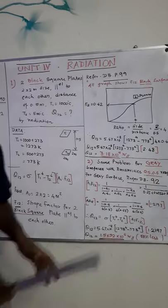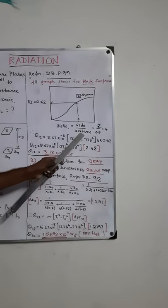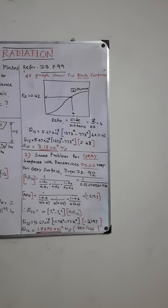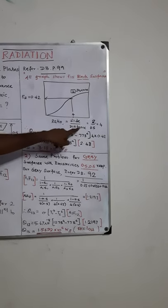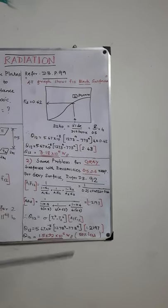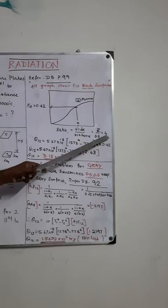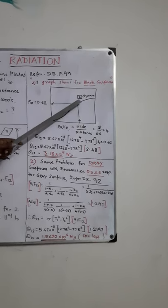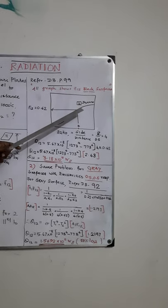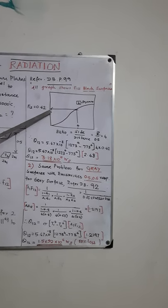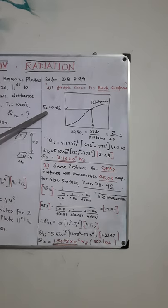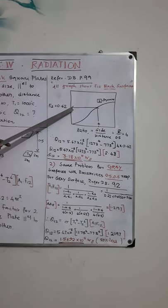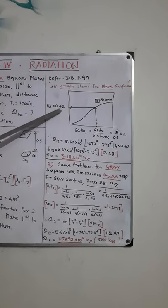So here, ratio can be calculated as side by distance. Here, side represents the square side, which is 2 meter divided by distance between these two is 0.5. So I will get a ratio of 4. Fix that 4 on your x-axis. Go vertically upwards until to get the square curve. And go towards the left to get by shape factor. So this is the shape factor on your reading, you will get nearly 0.62.